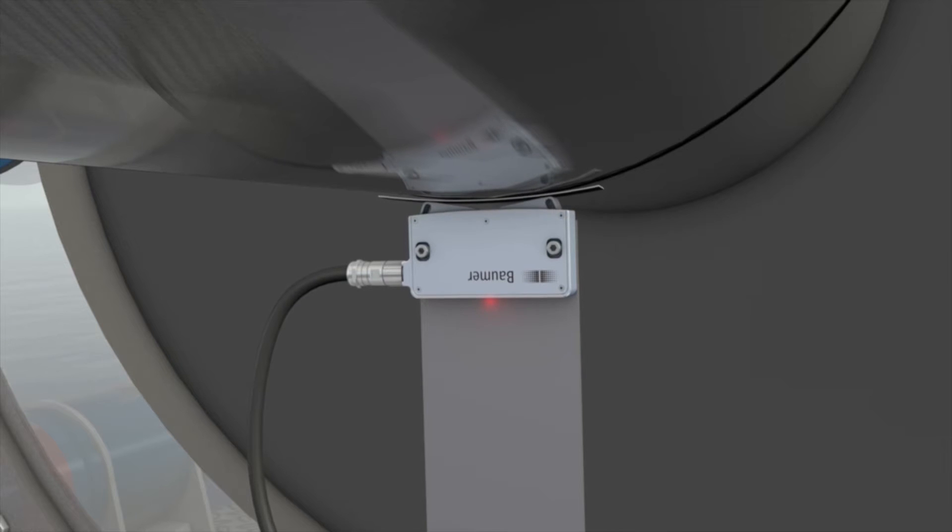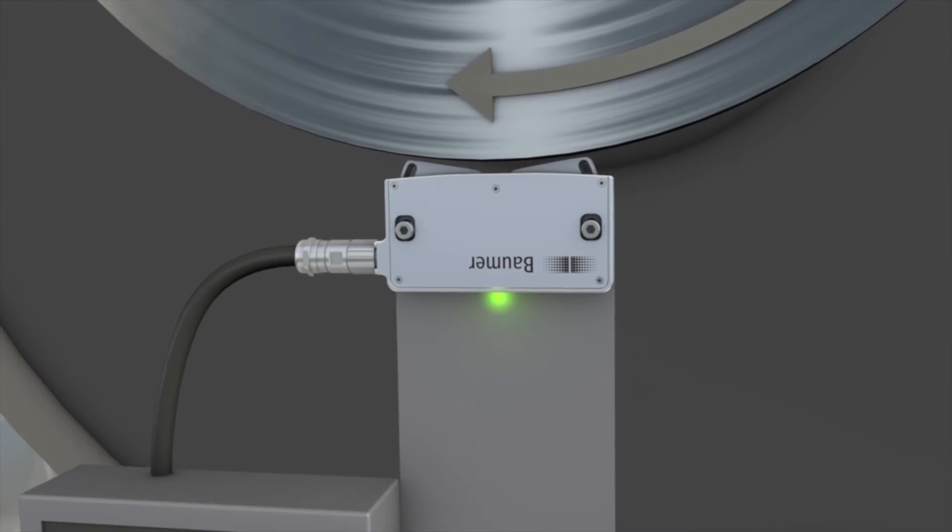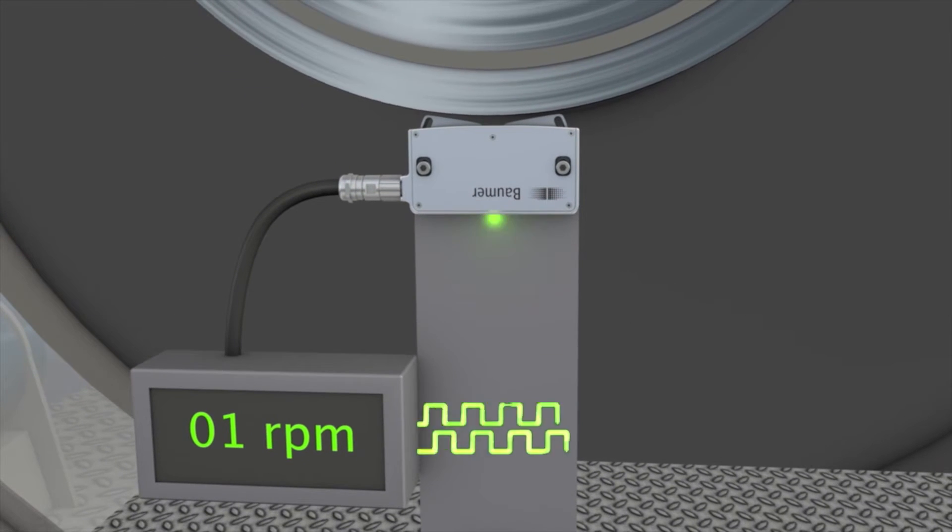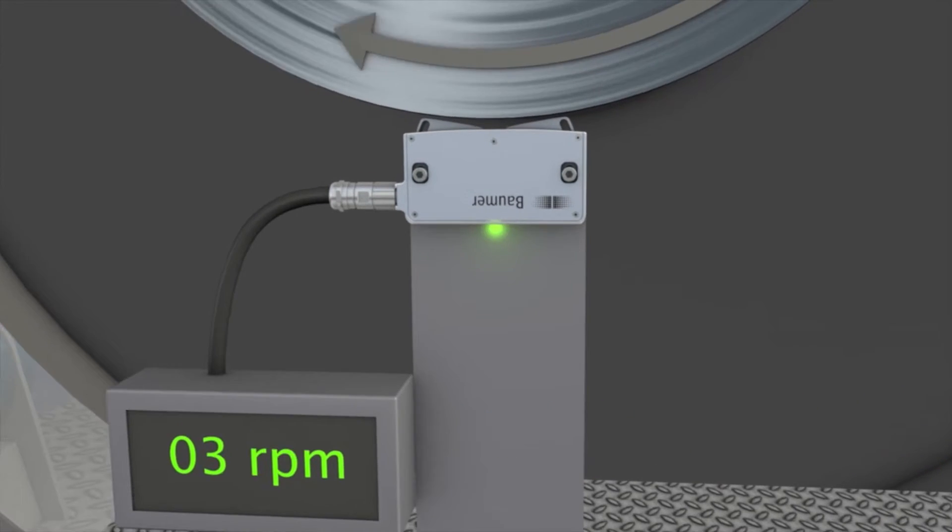Aligning the sensor head to the magnetic belt becomes a mere child's play thanks to the attached clearance gauge. Right at the first shaft motion, the system provides speed and position signals, visualized by the flashing LED.